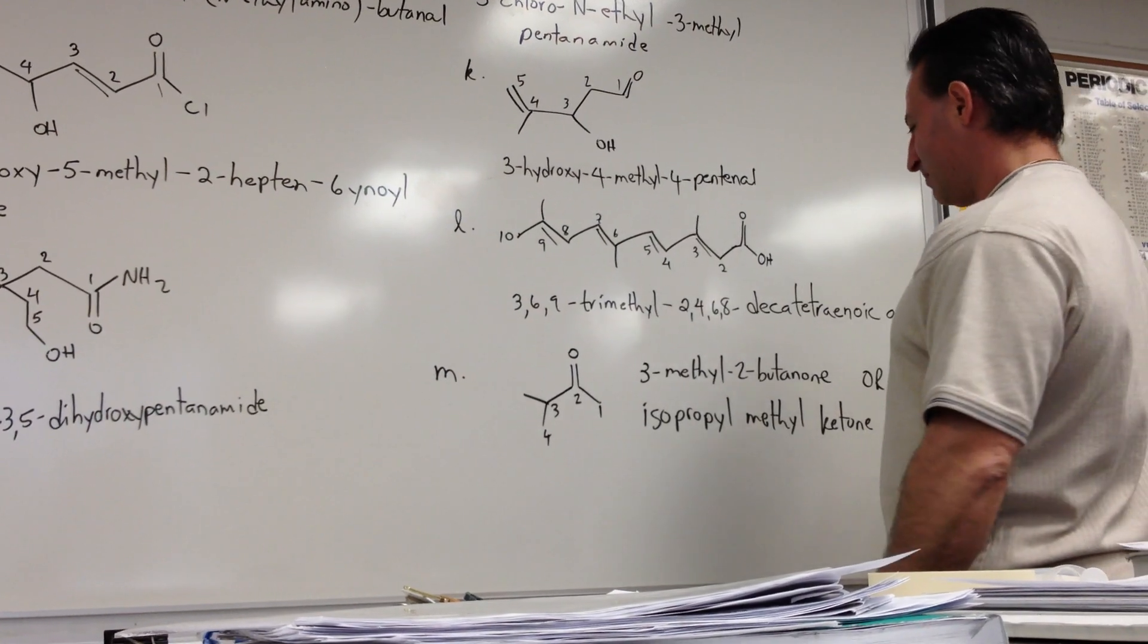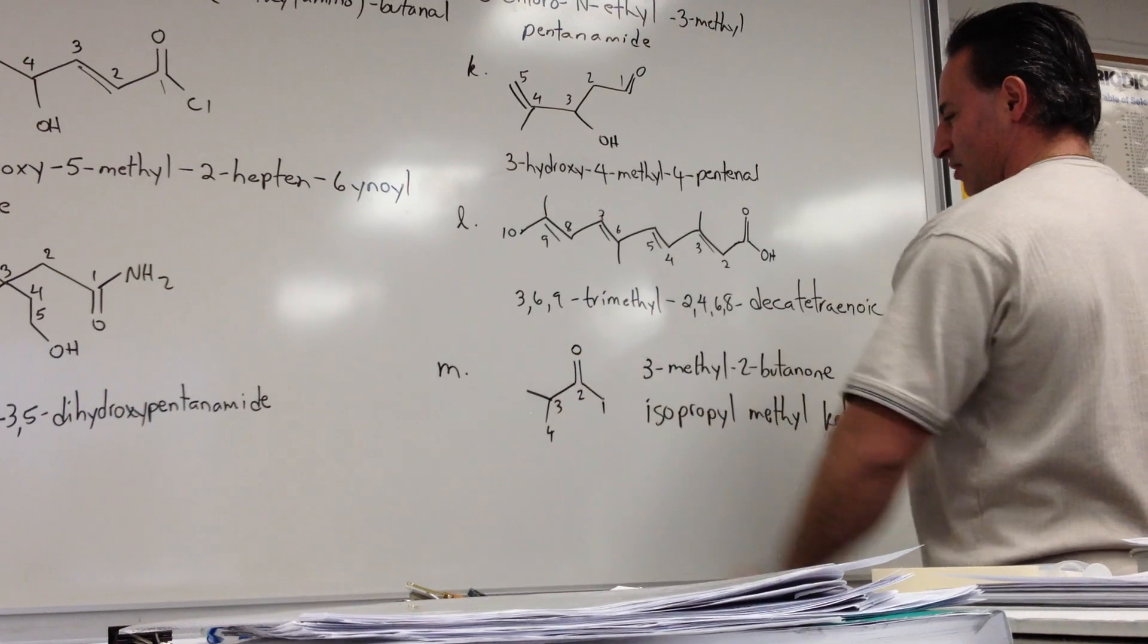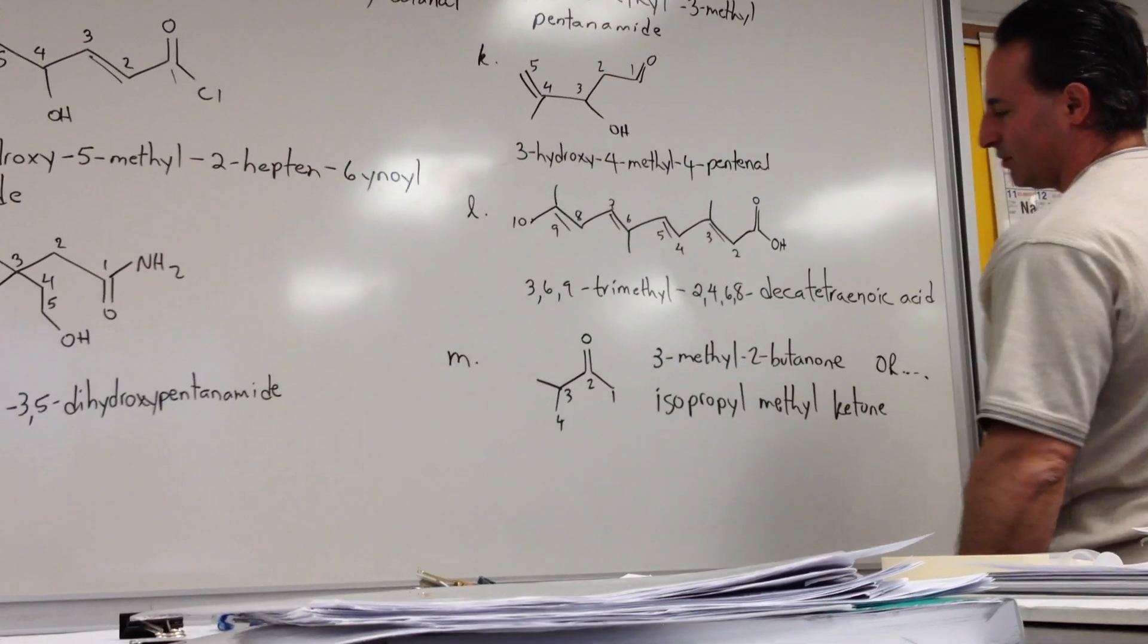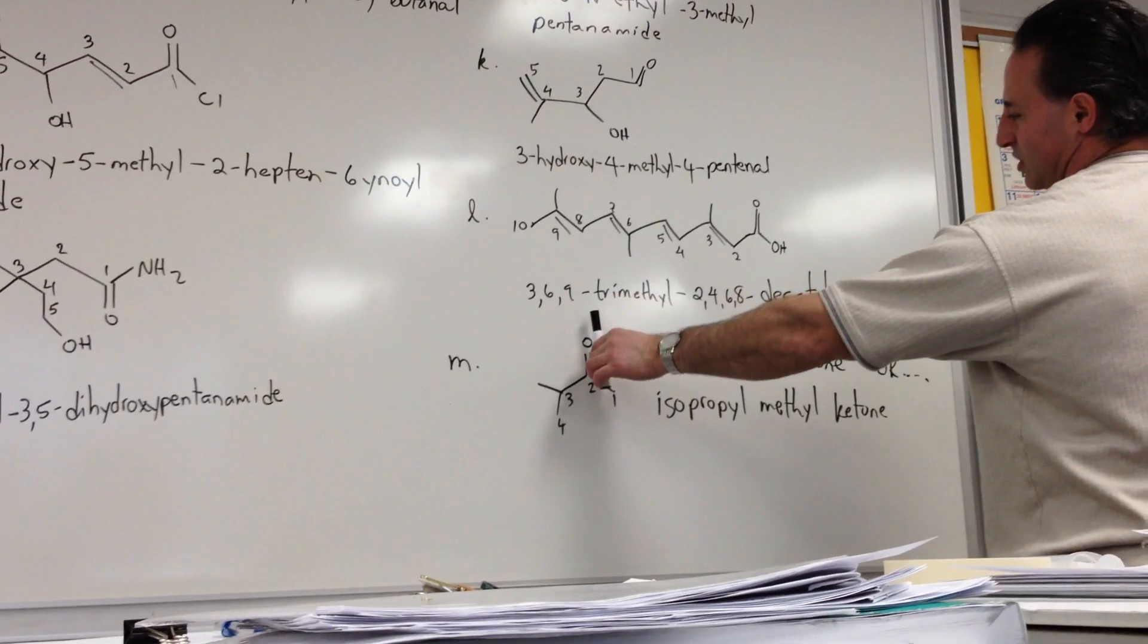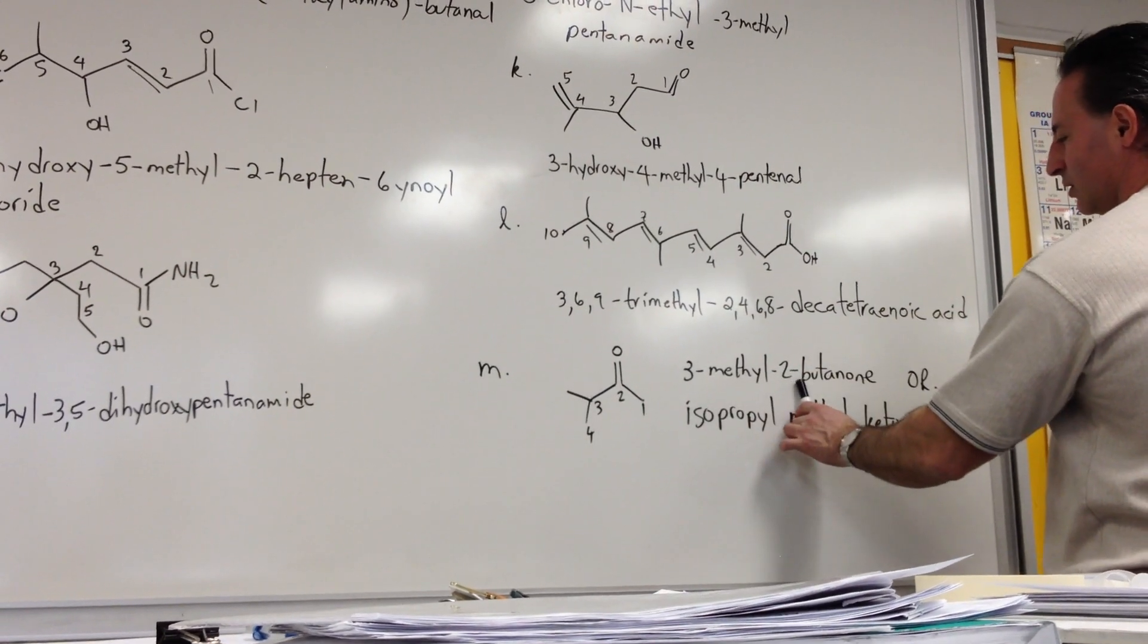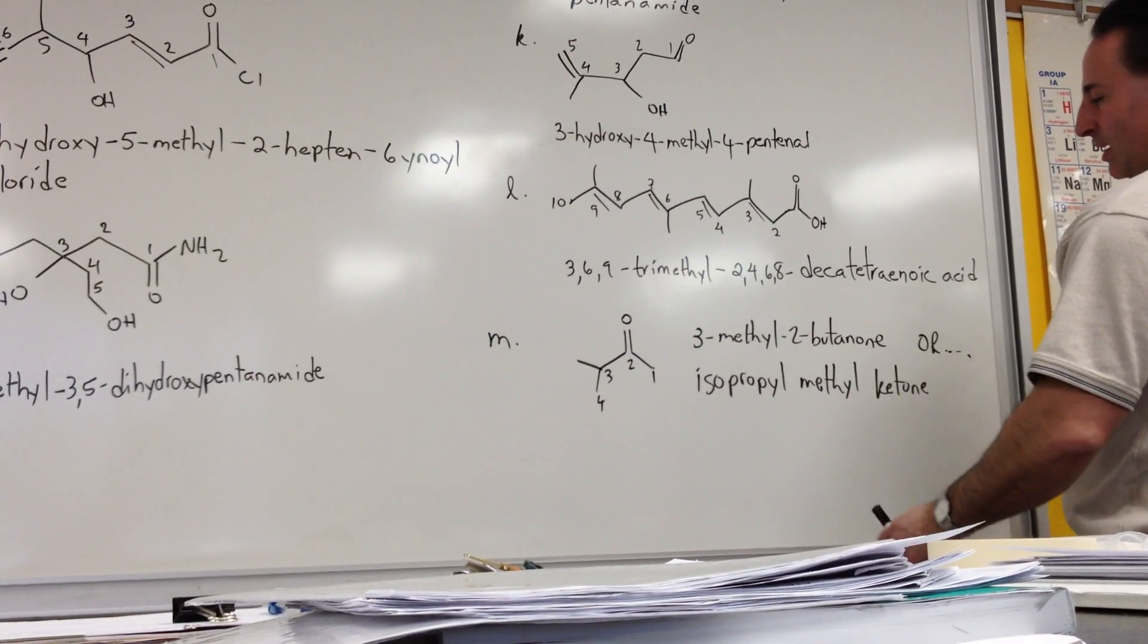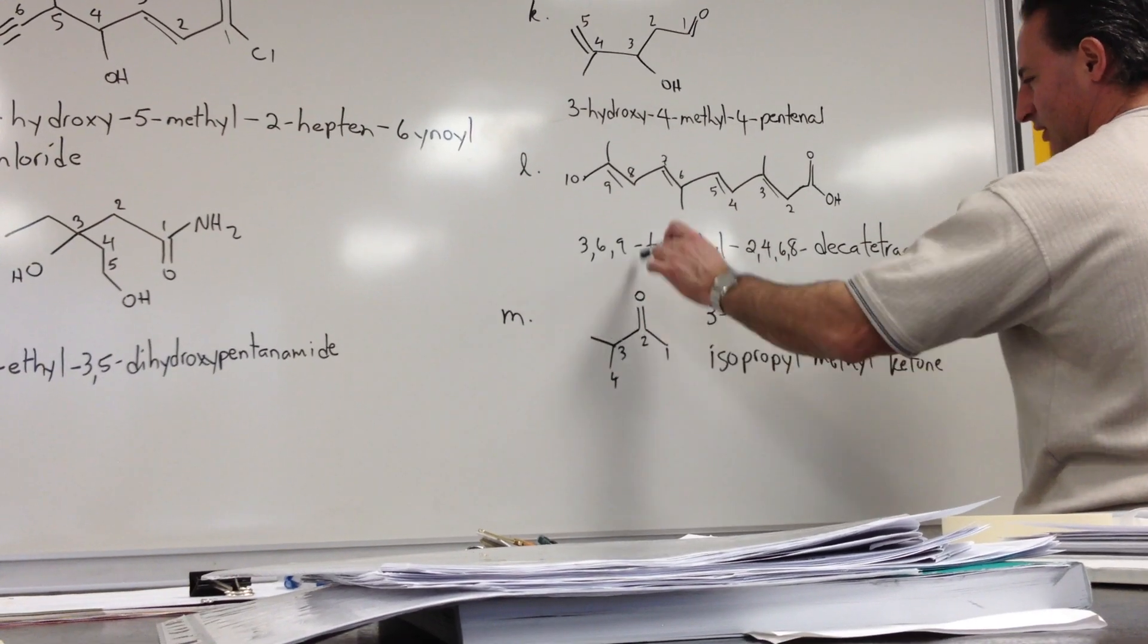The letter M, the longest carbon chain is 4, the methyl group at the 3rd position. It's a ketone. You can name it a couple of ways. We can name all the way through and then state the position of the ketone group, the carbonyl group. So we say 3-methyl-2, to show where the position of the carbonyl is, butanone. Or we can name it with three separate words, isopropyl-methyl-ketone.